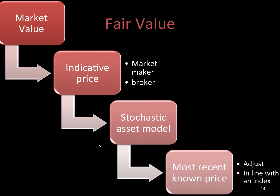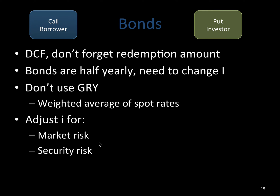For fair value, you could take the market value as an indicative price, maybe combine it with the stochastic asset model, or take the most recent known price and adjust it in line with some sort of index. For bonds, you can use discounted cash flow, but don't forget the redemption amounts. Bonds can be tricky if there are options built into them. Remember, you need to adjust the interest rate for market risk and security risk — that's a subjective judgment, which is why DCF sounds great in theory but requires experience.